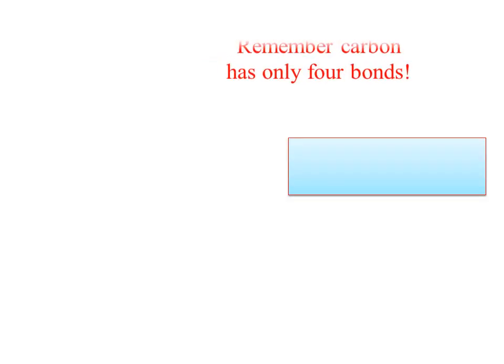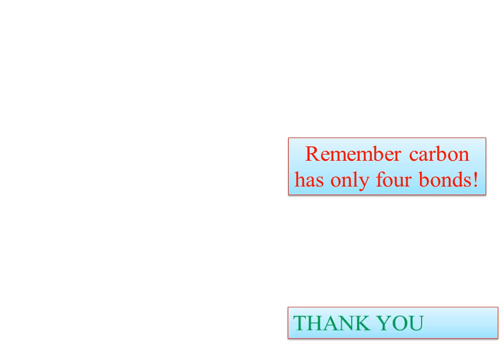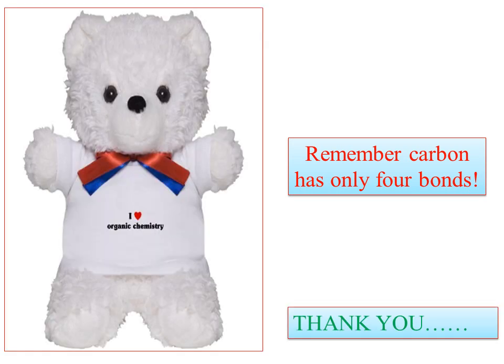These are the seven different chapters you are going to study in order to understand the chemical reactions and reaction mechanisms that take place in organic chemistry. Nothing to worry about organic chemistry — just remember that carbon is tetravalent and has only four bonds. Thank you, and all the best.